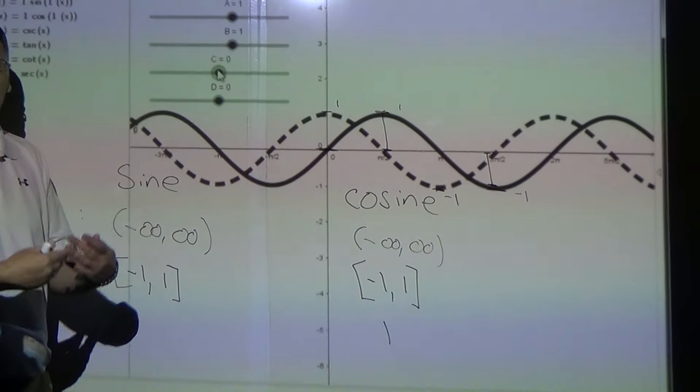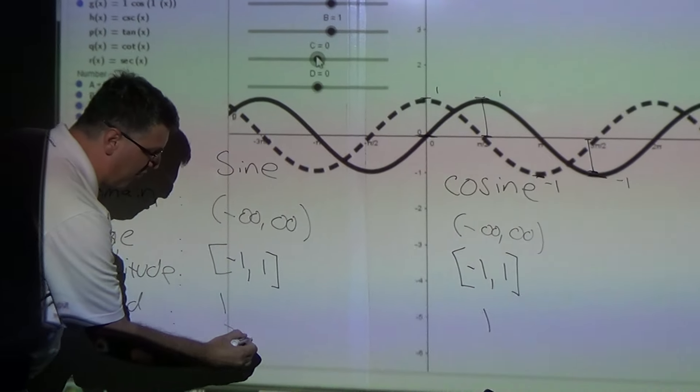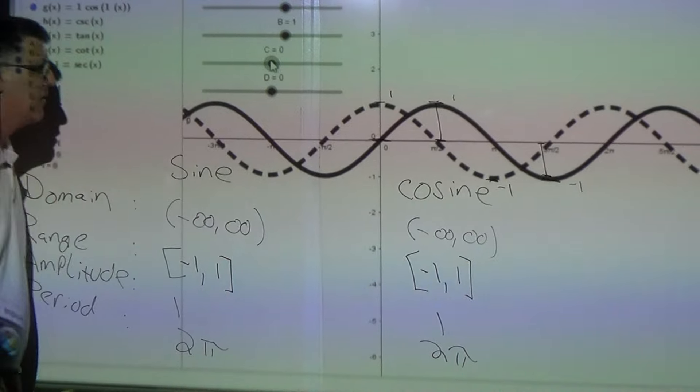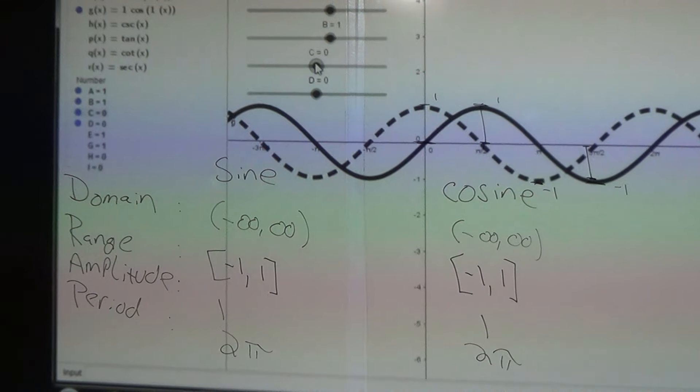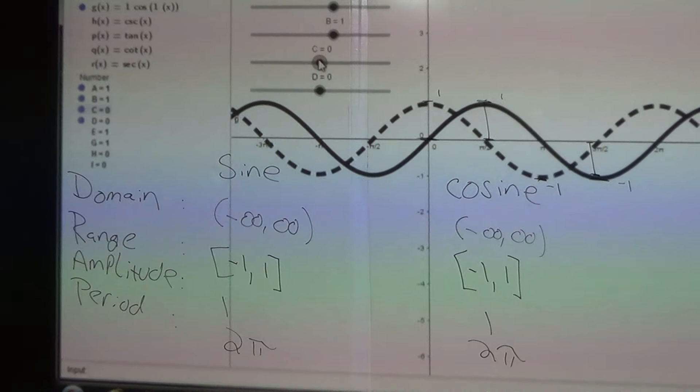Come all the way up. We're back to the x-axis. It starts above again. That right there is the end of your period. A standard period, before we start changing things around for both of these, is 2π. The domain, the range, the amplitude, and the period are the same for the sine and cosine waves.